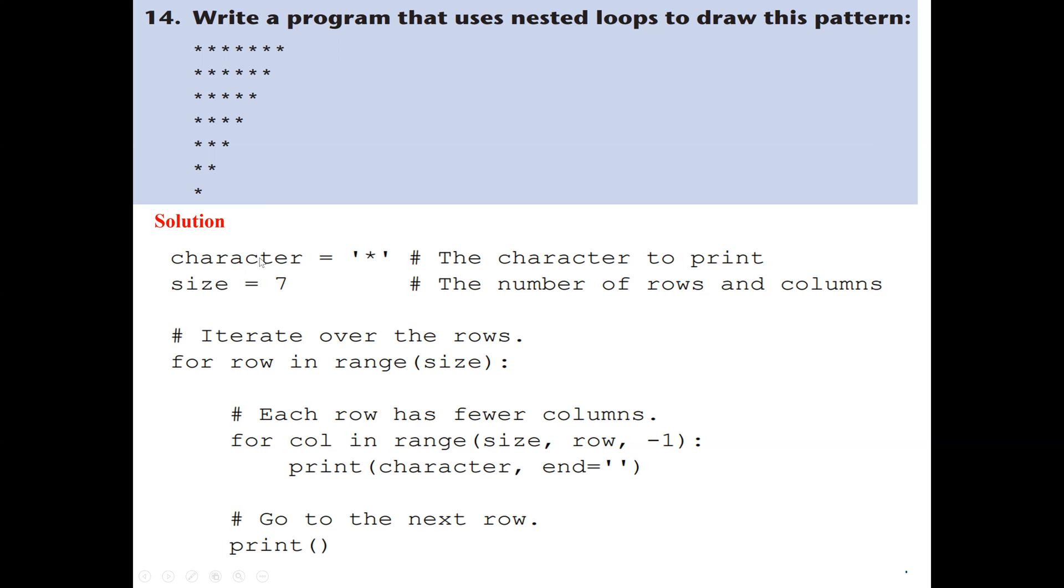First, we have a variable character. We assign the asterisk because that's what we're going to print. Then the size: this pattern has seven rows and seven columns, so we set the size to seven.